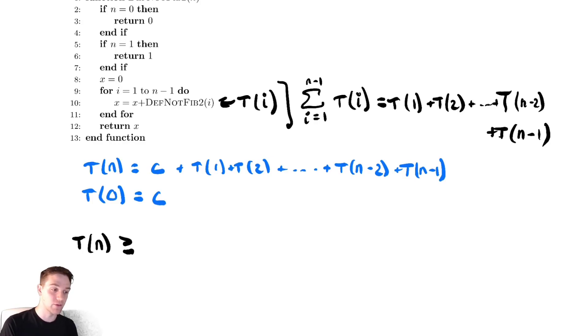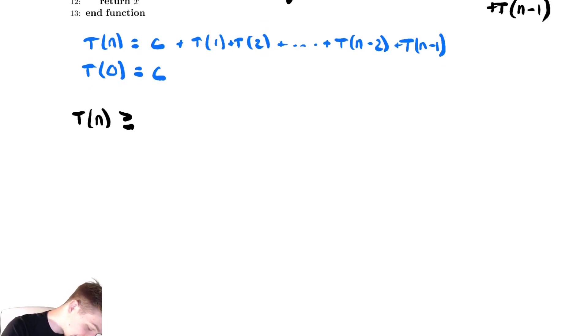that isn't the two recursive calls. So I'm going to drop everything except for the last two recursive calls: t of n minus two plus t of n minus one.